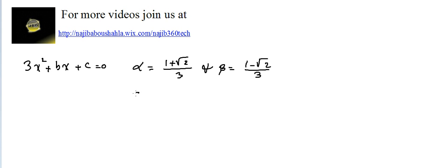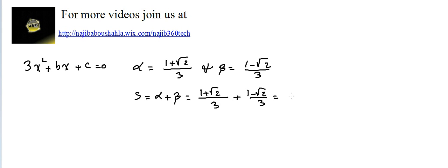The sum of the two roots is alpha plus beta, which equals (1 + √2)/3 plus (1 − √2)/3. Same denominator, so we can directly add the numerators, giving us 2 over 3.